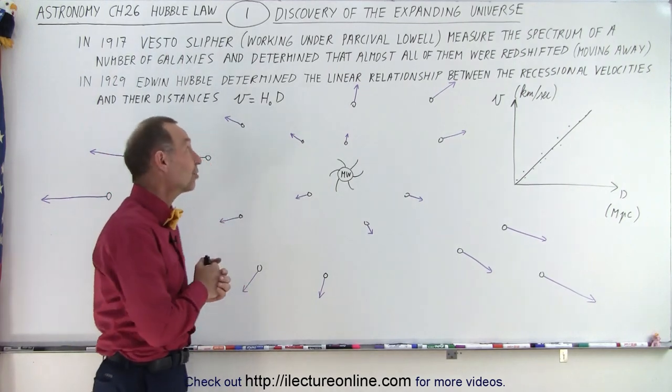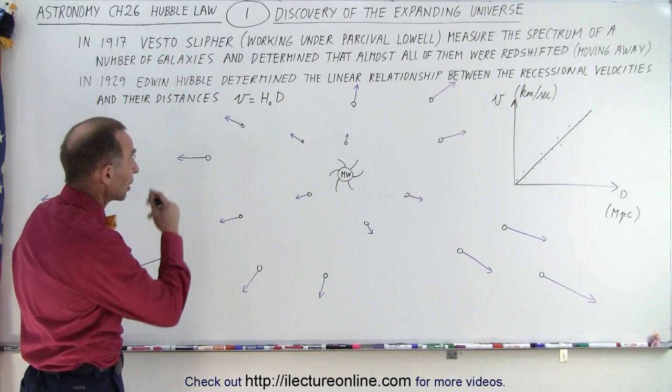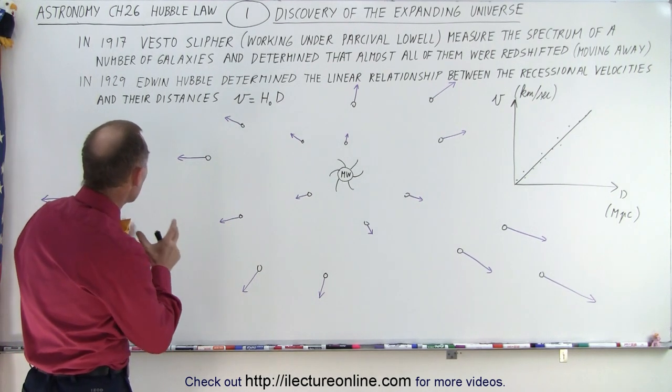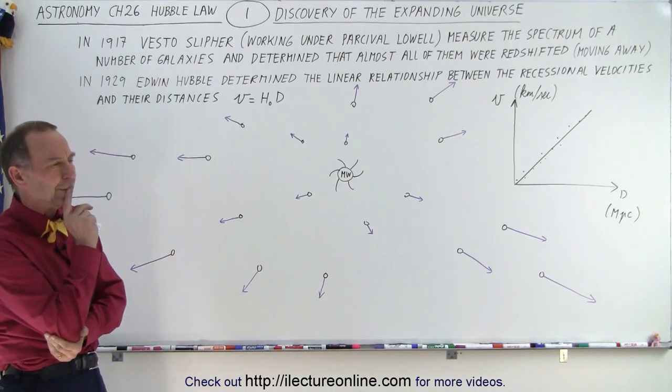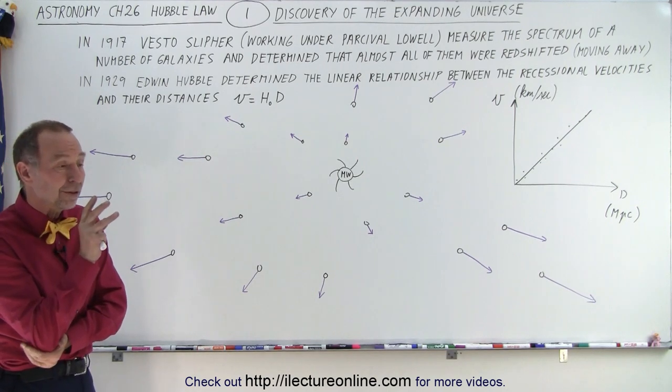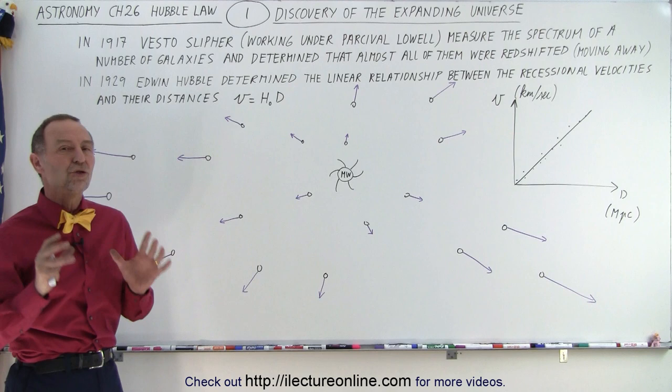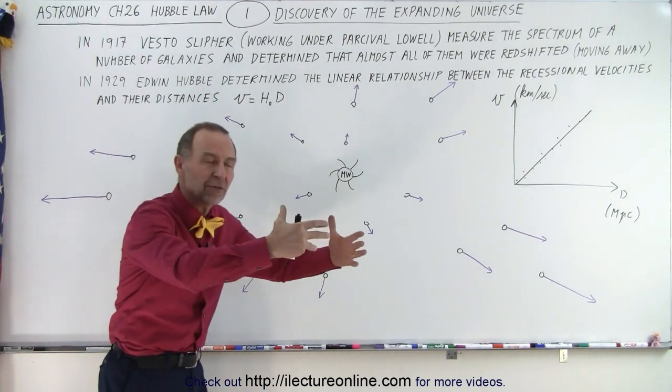Going back in history to 1917, Vesto Slipher, working under Percival Lowell, measured the spectrum of a number of galaxies and determined that almost all of them were redshifted. Not all of them, because there's still some gravitational interaction, but the vast majority were redshifted, which meant that they were moving away from us.